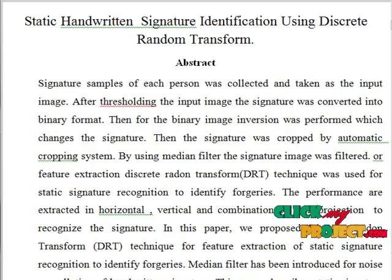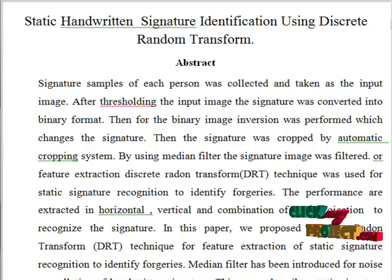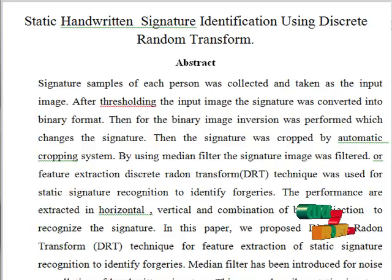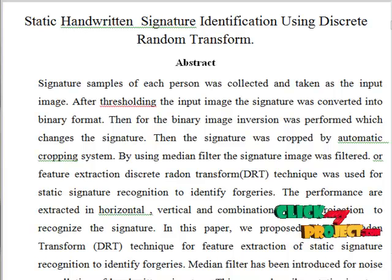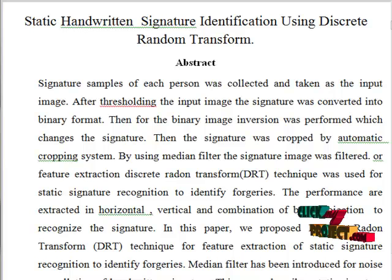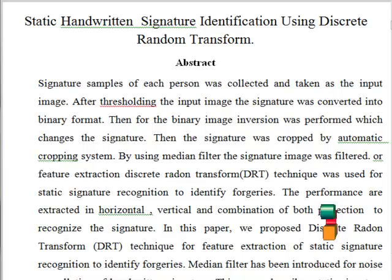Let us see the abstract for this process. Signature samples of each person were collected and taken as the input image. After thresholding the input image, the signature was converted into binary format. Then for the binary image, inversion was performed which changes the signature. Then the signature was cropped by automatic cropping system, and the signature image was filtered using median filter.